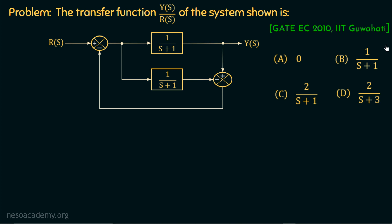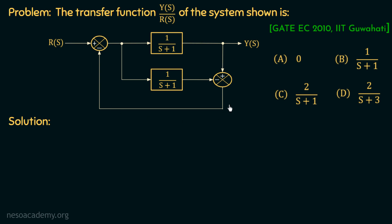I want you all to pause this video and try this problem on your own. If you are able to do it, post your answers in the comment section. Moving on to the solution: if we want to calculate the transfer function of this block diagram, we can use block diagram reduction rules, a shortcut method, or Mason's gain rule. In this lecture, we are going to apply Mason's gain rule to find out the transfer function.